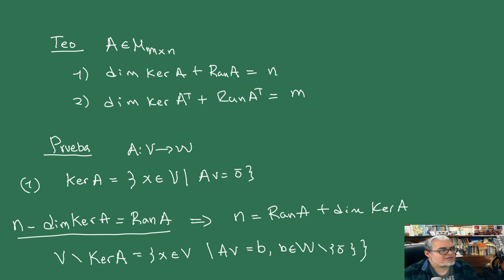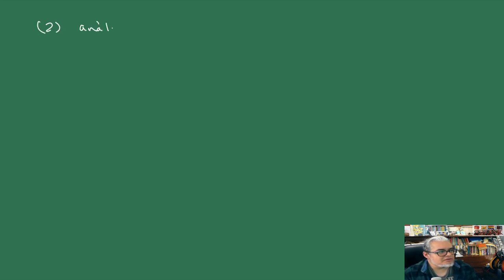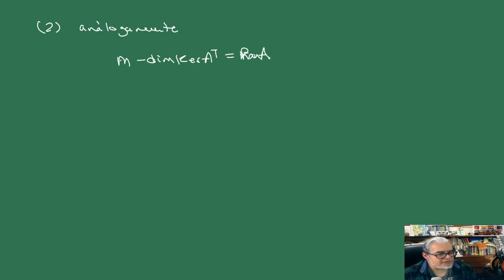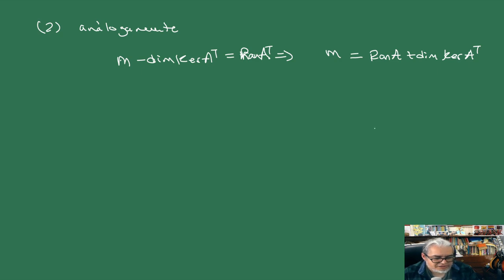La parte 2 es análoga: solamente tenemos que M menos la dimensión del kernel de A traspuesta va a ser el rango de A traspuesta, entonces M es igual al rango de A traspuesta más la dimensión del kernel de A traspuesta. La traspuesta nos dice qué tanto le falta a la matriz para ser cuadrada, más o menos.